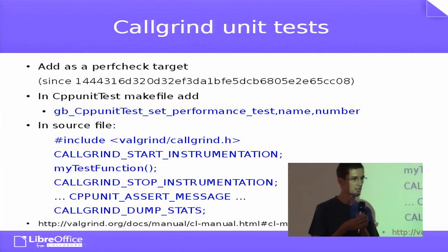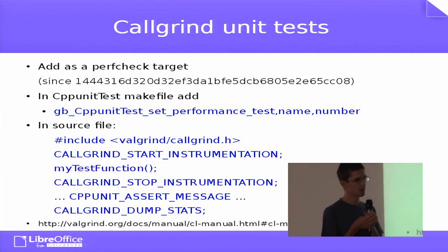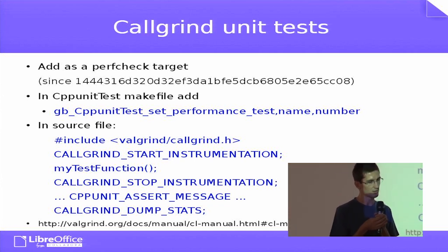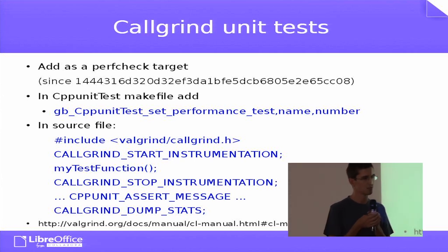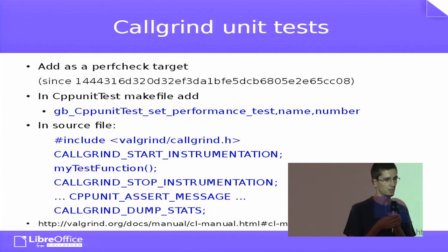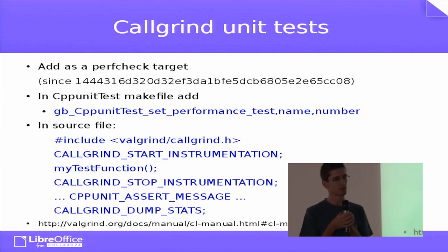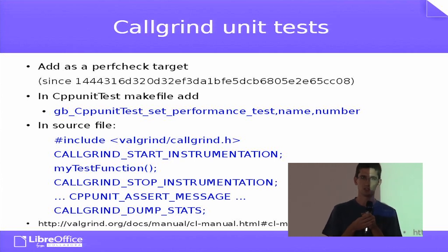In the makefile you want to call the setPerformanceTest macro, and in the source file you include the callgrind header and use some macros to tell it when the code you want to test is running, and then you will get the number of instructions.